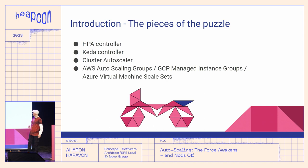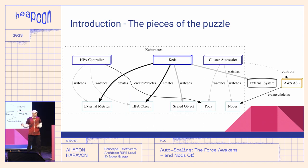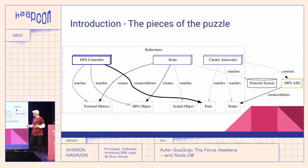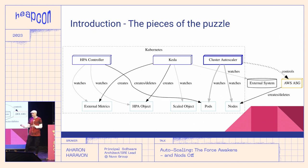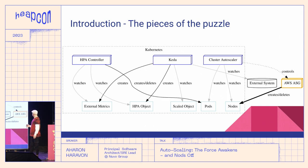KEDA brings metrics from the external world into Kubernetes and creates the HPA object. The HPA controller monitors the metrics according to the definition in the HPA object and reacts to its changes by adjusting the pod count in the scaled application. The cluster autoscaler in turn detects that nodes are missing or unneeded and adjusts the node count accordingly by talking to the cloud vendor's autoscaling infrastructure, which then provisions or removes virtual machines.